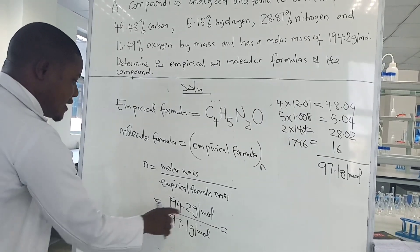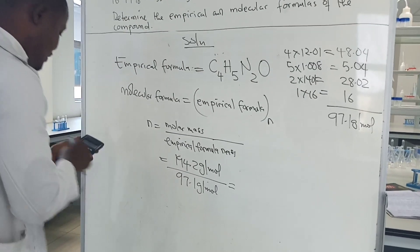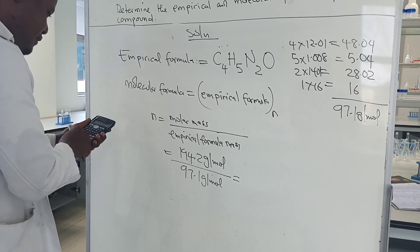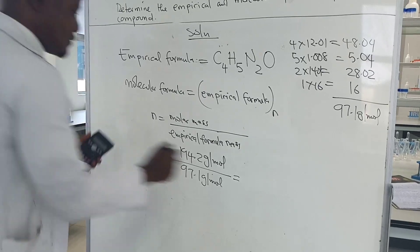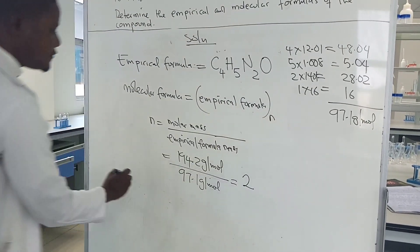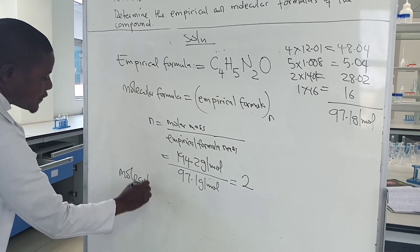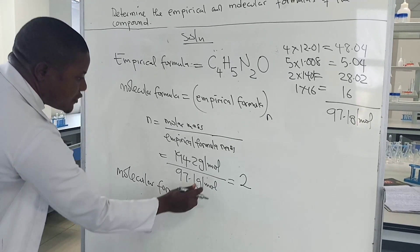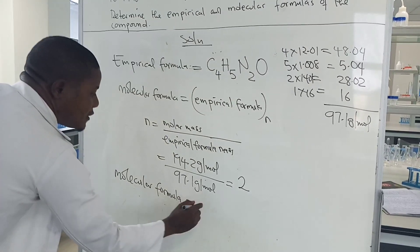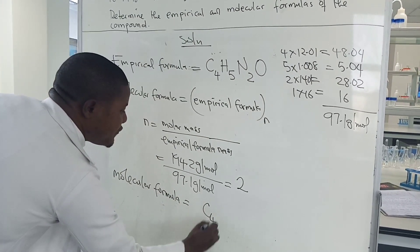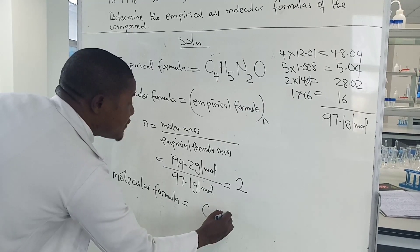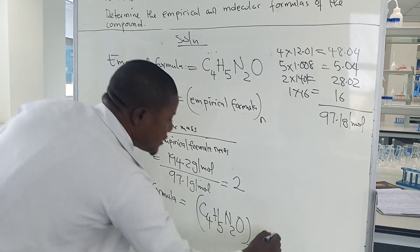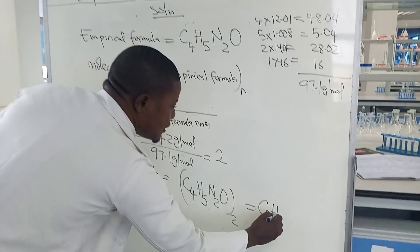Dividing: 194.2 divided by 97.1 gives us 2. So N equals 2. Therefore, the molecular formula equals the empirical formula C4H5N2O multiplied by 2, which gives us C8H10N4O2.